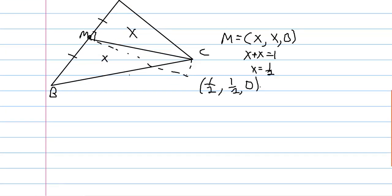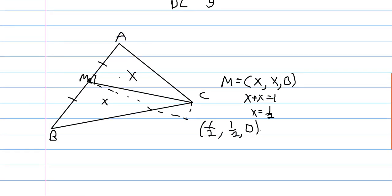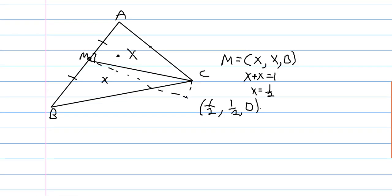What about other things we can look at? A point is inside triangle ABC if each coordinate is positive. If a point lies on a side, then one of the triangles it makes will be degenerate, so it will have a zero coordinate.